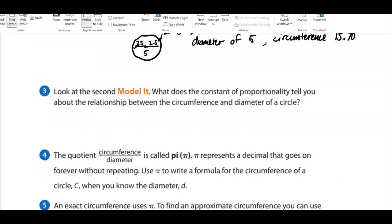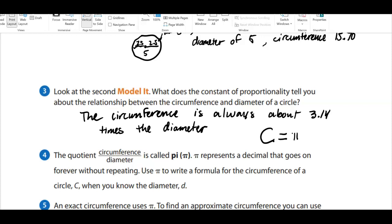And so here's the big takeaway. What does the constant of proportionality, which was 3.14, tell you about the relationship between circumference and diameter of a circle? So the circumference is always about 3.14 times the diameter. So we get this new mathematical equation that stays true the entire time. C is equal to pi D. Circumference is equal to pi or about 3.14 times our diameter.